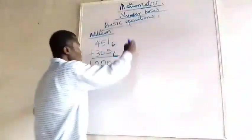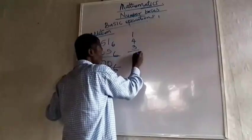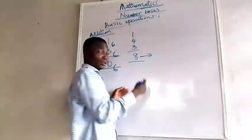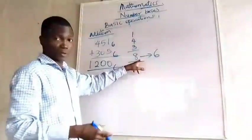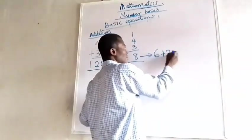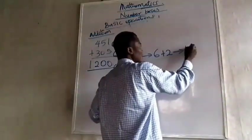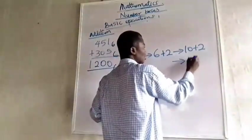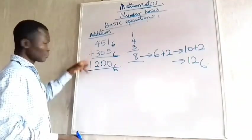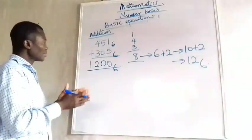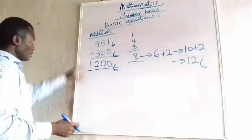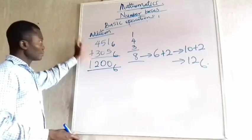Since 8 is bigger than 6, I write 8 divided by 6: that is 6 plus 2, giving 10 plus 2, which is 12 in base 6 notation. So I write 2 here and carry 1, giving a final answer of 1200 base 6. The key is: once a sum reaches or exceeds the base, you carry forward just like in base 10.